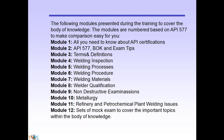The following modules are presented during the training to cover the body of knowledge, numbered based on the API 577 table of contents. Module 1: all you need to know about API certifications. Module 2: API 577 body of knowledge and exam tips — this module. Module 3: terms and definitions. Module 4: welding inspection. Module 5: welding processes. Module 6: welding procedure. Module 7: welding materials. Module 8: welder qualification. Module 9: non-destructive examinations. Module 10: methodology. Module 11: refinery and petrochemical plant welding issues. The last module includes two sets of mock exams. Some modules are divided into sub-modules for easier learning.